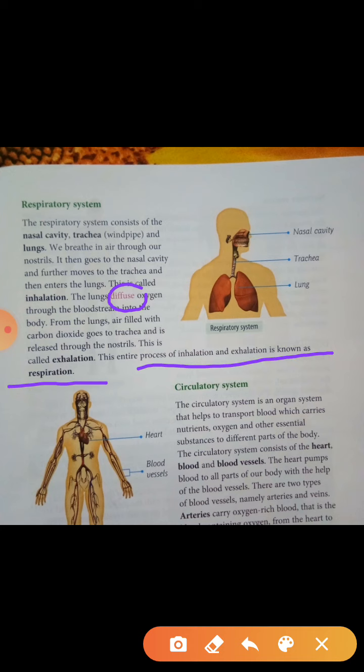To summarize our respiratory system: we take in air through our nostrils, then it goes to the nasal cavity, then to the trachea, and then into the lungs. The lungs transport oxygen through the bloodstream to our body. Then air filled with carbon dioxide goes back through the trachea and is released through the nostrils.